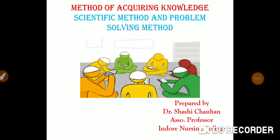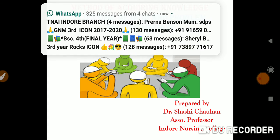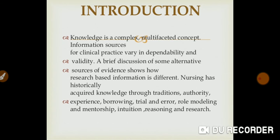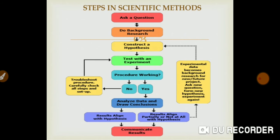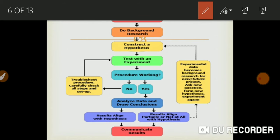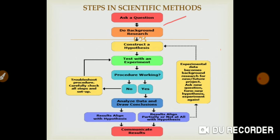Good morning, dear students. We were discussing the methods of acquiring knowledge through scientific method. We covered the introduction, definition, basic concepts, and characteristics. We were on the steps of scientific process or scientific method. The first step is to ask a question - if we want to do any study, we first understand which topic or problem we are going to conduct our study on, and we prepare a statement or select a topic.